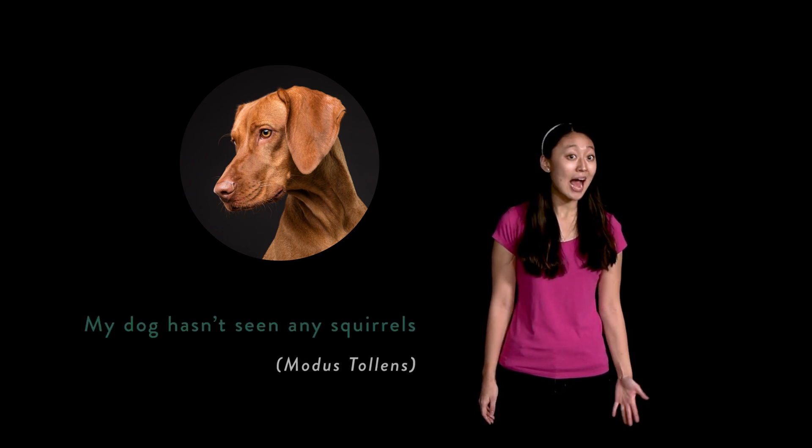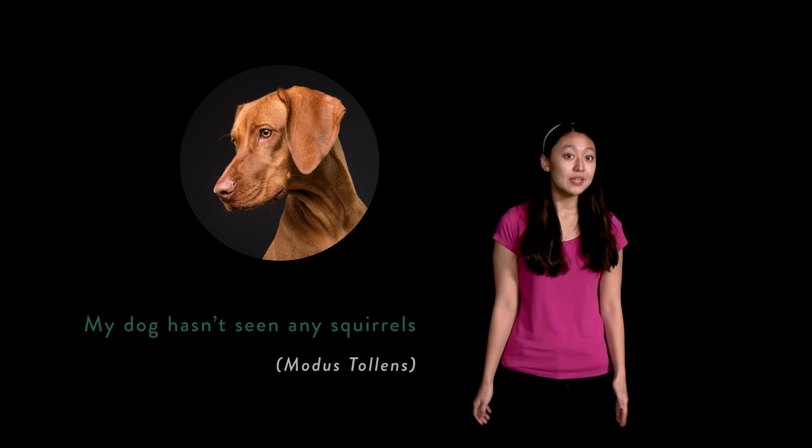Modus tollens. As from before, suppose that I know that if my dog sees a squirrel, then it will chase that squirrel. Now suppose that I know that my dog has not chased any squirrels today. I will infer from this that my dog hasn't seen any squirrels today. This inference is an example of modus tollens.